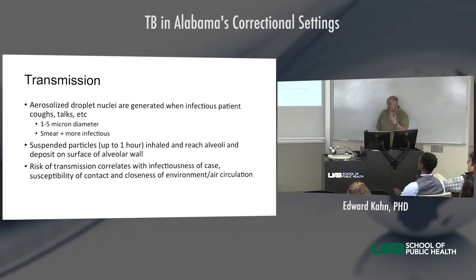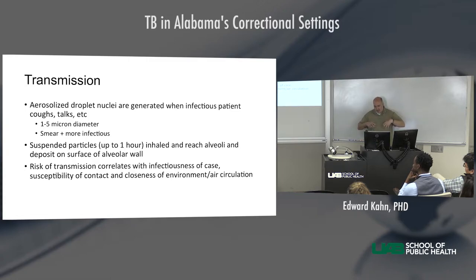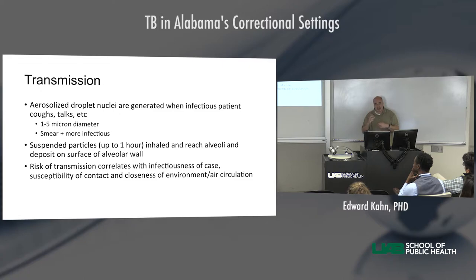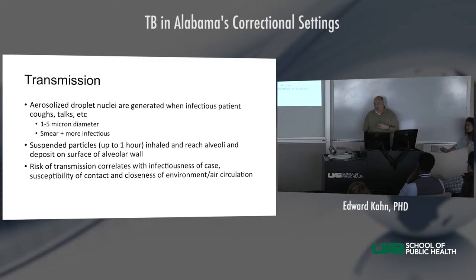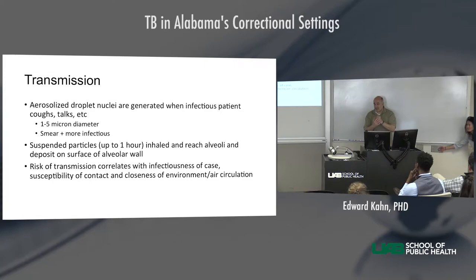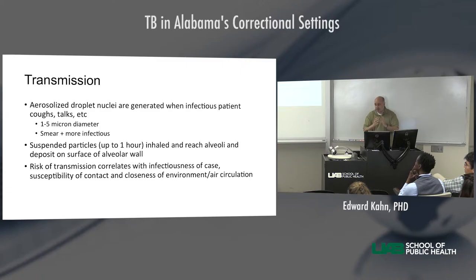The way we get infected is those small droplet nuclei are breathed in. They go down through the airways — trachea, bronchi, multiple divisions — and eventually deposit in the walls of the alveoli, where gas exchange takes place. Patrolling immune cells in those alveoli engulf the bacilli, recognizing them as foreign. In some cases they're effective and kill the infection, but in other cases an equilibrium is reached where the bacilli are not killed but the immune system contains them.